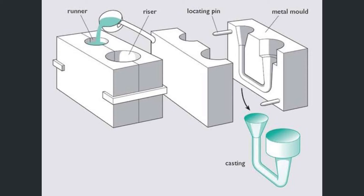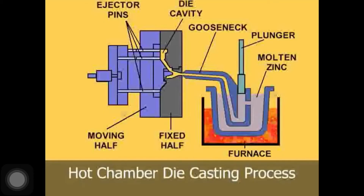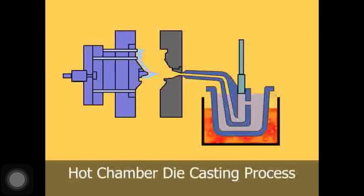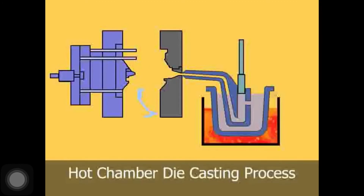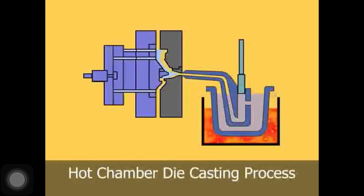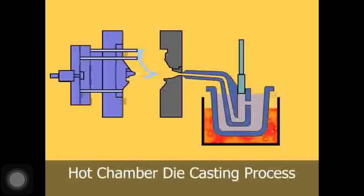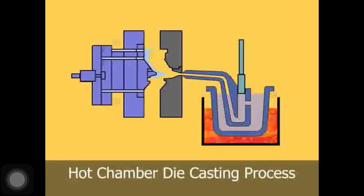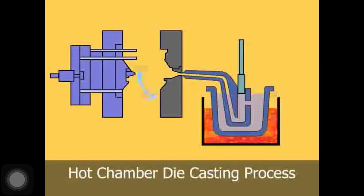The second type is pressure die casting, which has two subtypes: hot chamber die casting and cold chamber die casting. In hot chamber die casting, metals with low melting points are casted, and a furnace is attached for heating and melting the metal. These low melting point materials include lead, tin, and zinc. An external plunger is used to force the liquid metal into the molds.